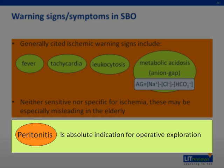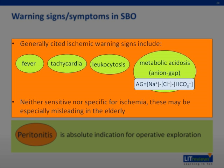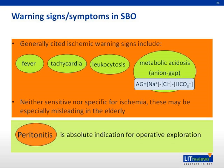Peritonitis remains an absolute indication for exploration today, as it did decades ago. Absent that, traditionally cited ischemic warning signs are fever, tachycardia, leukocytosis, and/or anion gap acidosis. In retrospective review of patients with small bowel obstruction, these parameters do not predict the need for operative management. They are neither sensitive nor specific for ischemia and are especially misleading in the elderly, who are also at the highest risk for bowel strangulation and mortality. Despite these limitations, early operation in patients with the above-mentioned findings is thought to identify strangulation in up to half the cases. Presence of these clinical indicators in the setting of abdominal imaging consistent with obstruction should constitute a low threshold for operation.